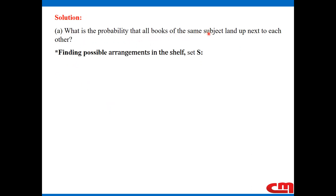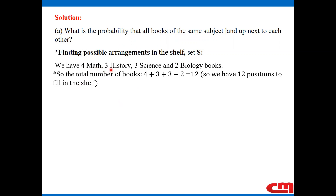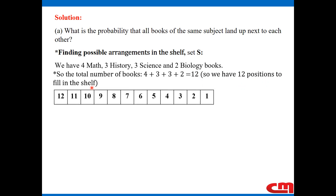We are dealing with probability, which is a fraction between zero and one. The numerator consists of favorable outcomes and the denominator consists of possible outcomes. To start, let us find the possible arrangements on the shelf — that is set S. We have four math, three history, three science, and two biology books, giving a total of 4 + 3 + 3 + 2 = 12 books.